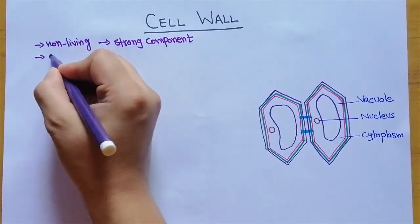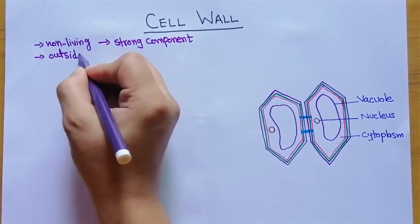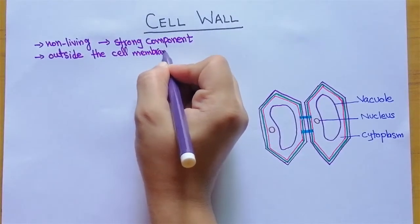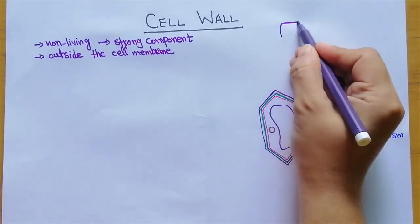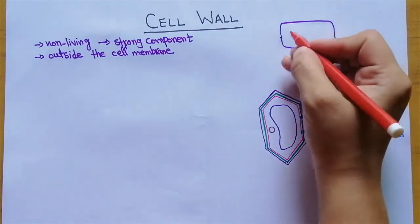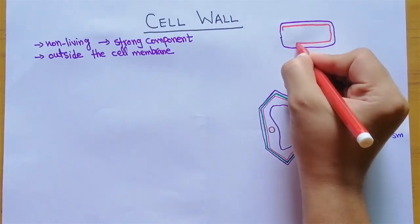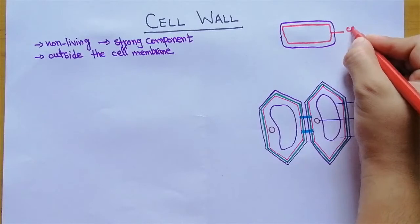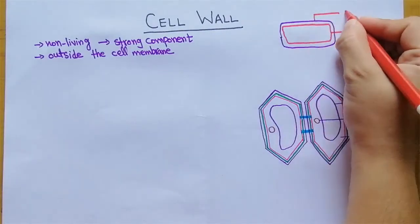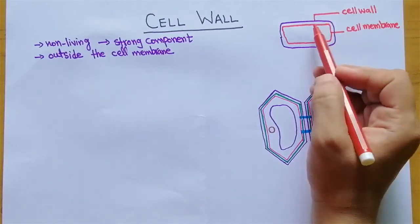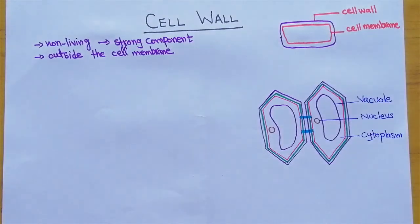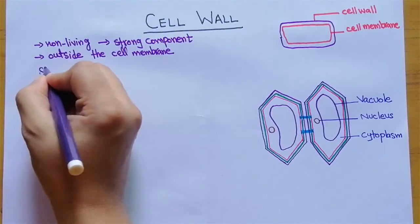Cell wall is present outside the cell membrane. If you remember the structure of plant cell, we know there are two layers: an outer layer and an inside layer. This red layer is actually the cell membrane, while this outer layer is the cell wall. This is non-living but a very strong component. So let's study about the structure of cell wall.